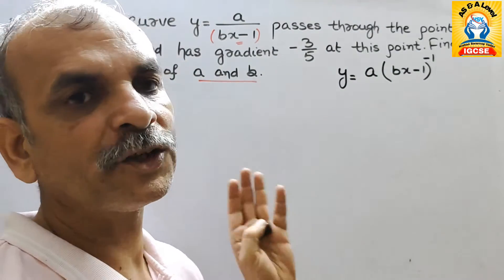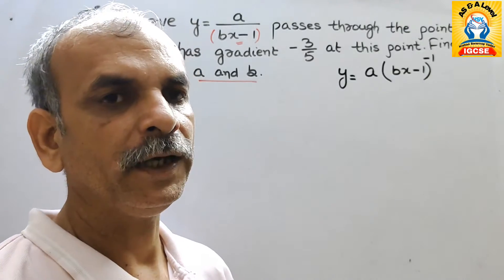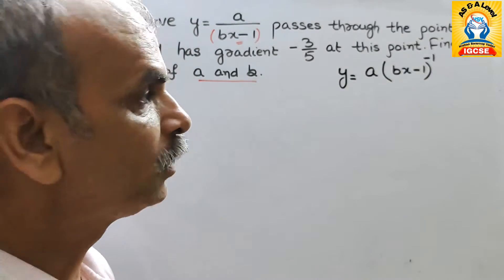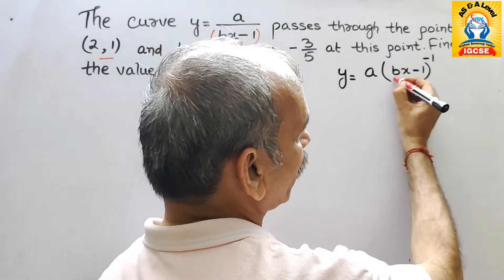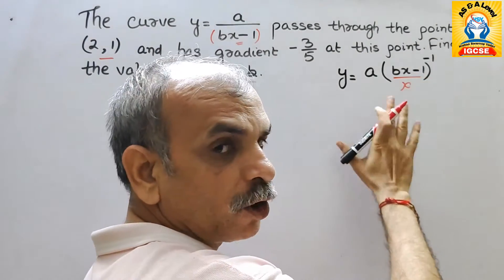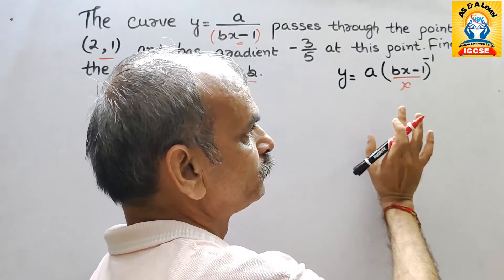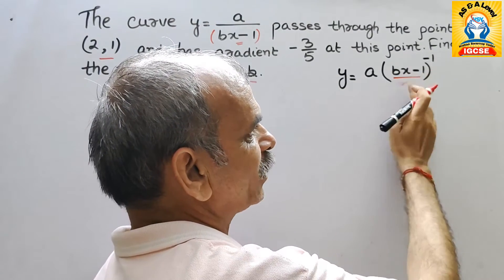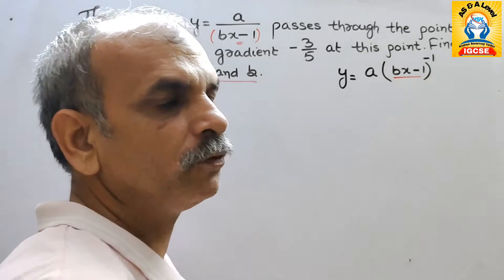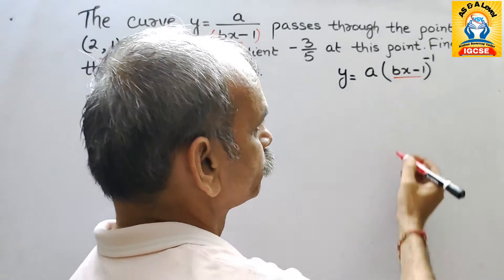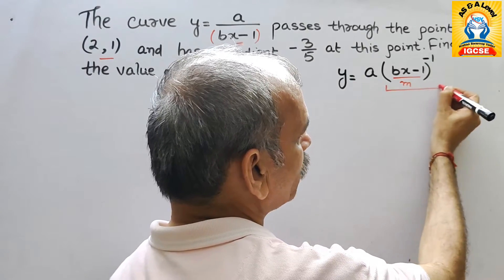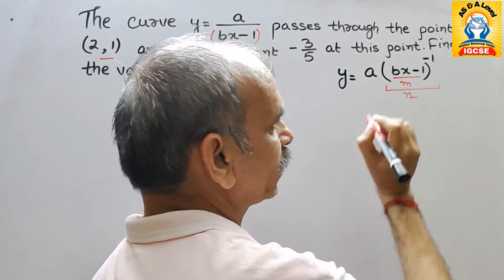Here we will go for the chain rule. In chain rule, whatever is in the bracket we will take it as m. Here x is also there, a is also there, b is also there — we will take the bracket and its power as m.